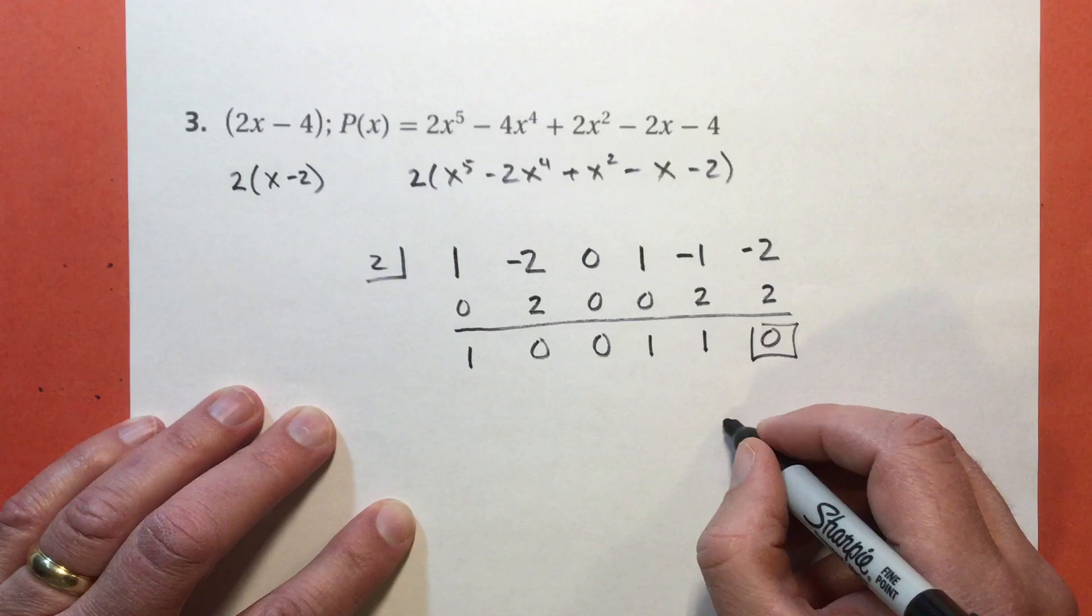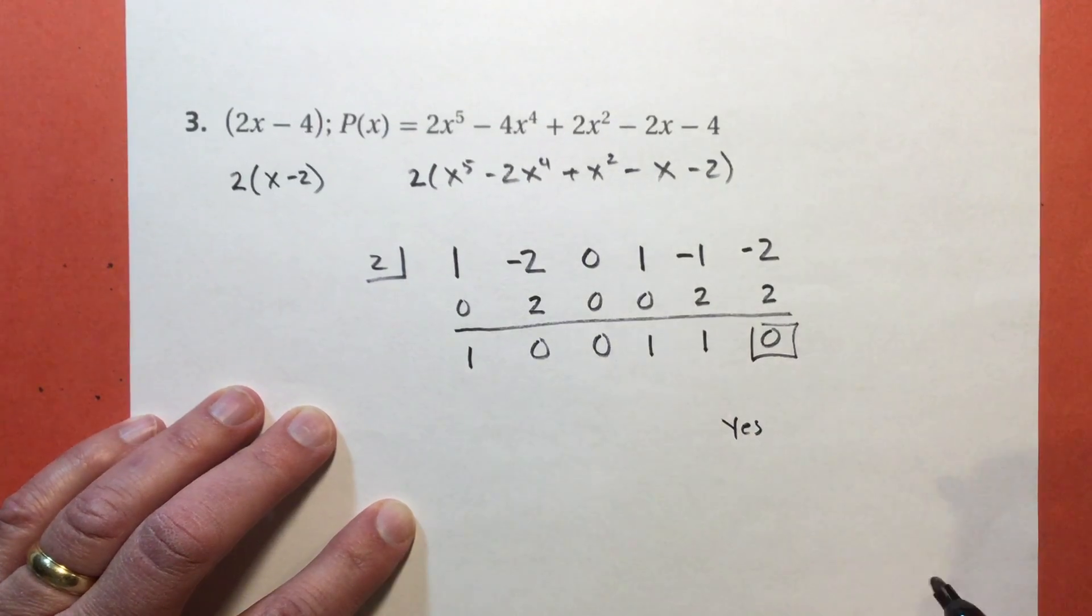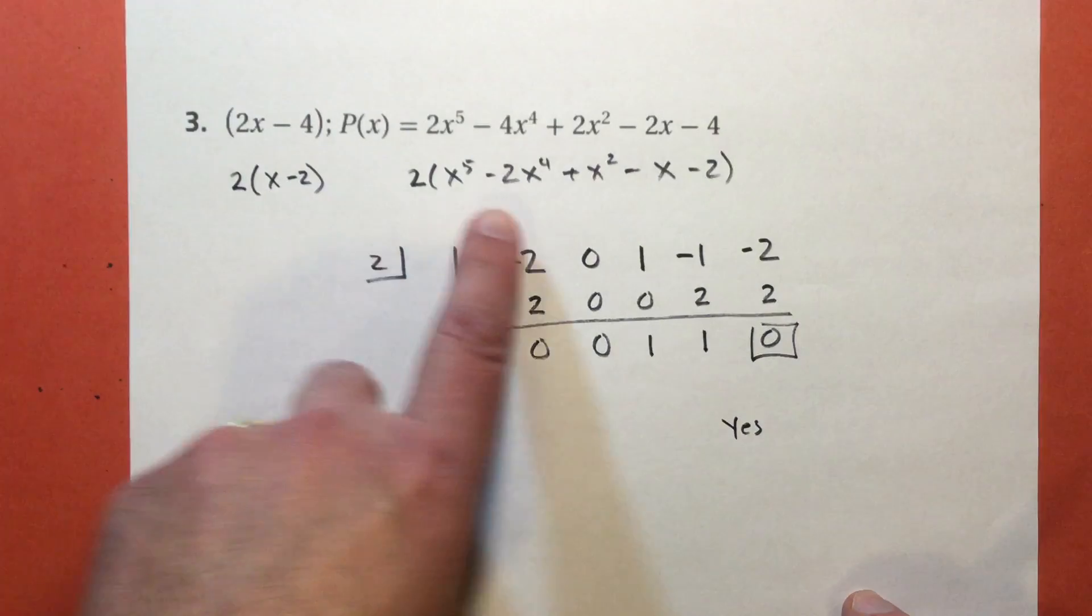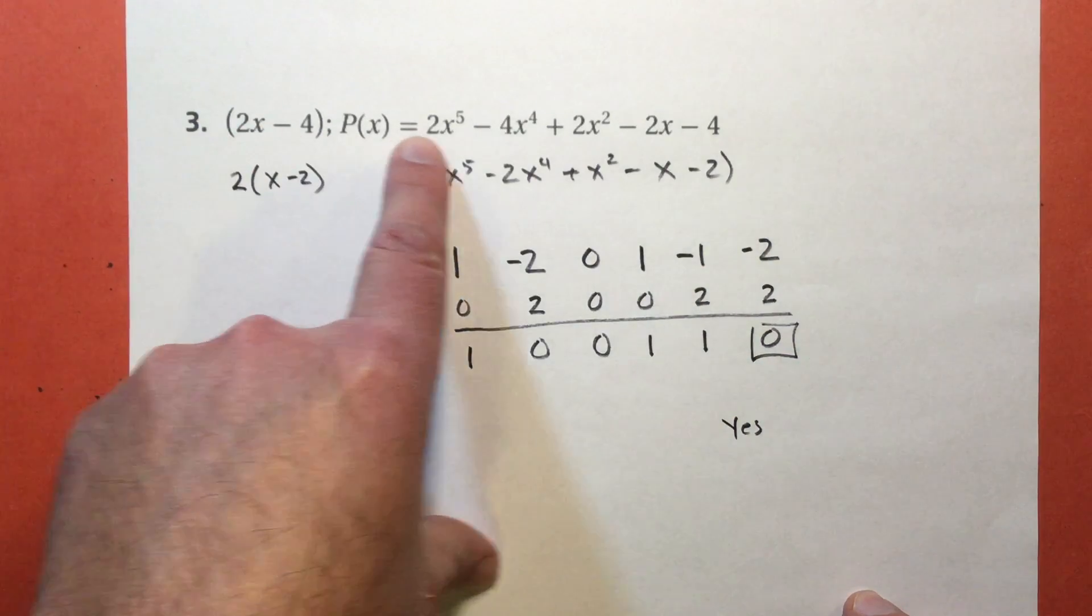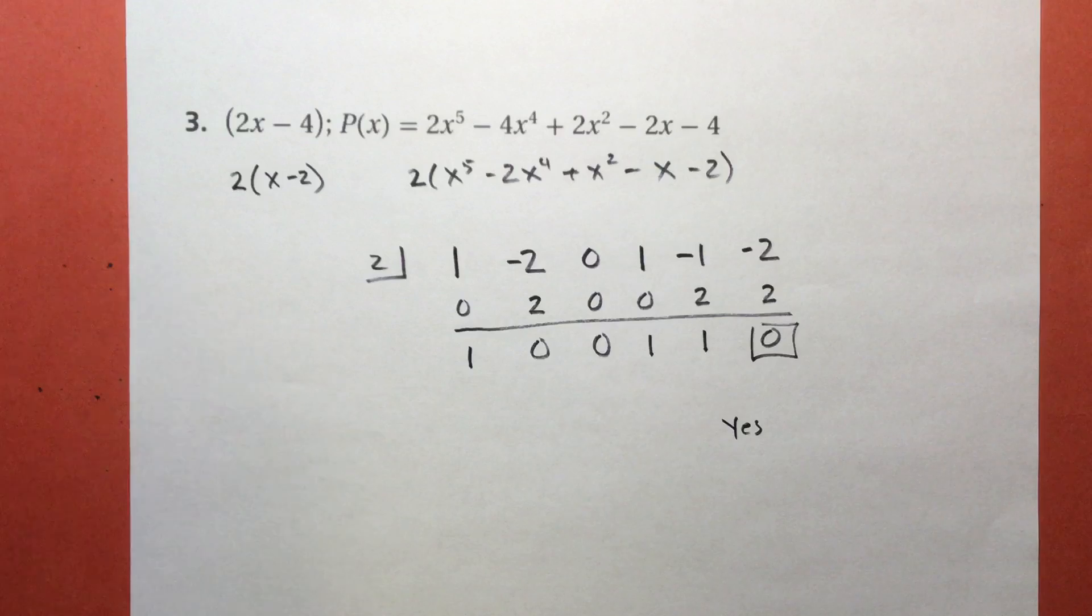No remainder? So the answer is yes. And if x minus 2 is a factor of what I had left here, then 2x minus 4 would have to be a factor of that one, because the 2 is also included in it. We will see you in the next video where we're going to factor by grouping.